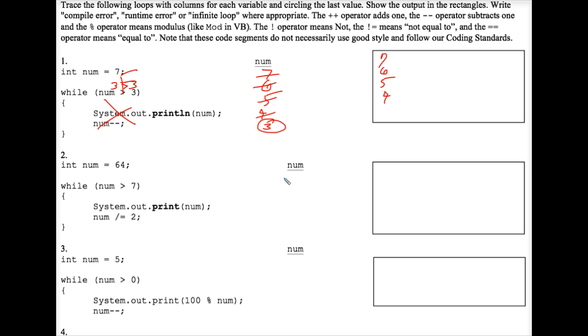Number 2. 64. That is greater than 7, so it prints 64. And then 64 divides itself by 2. So it chops it down to 32.